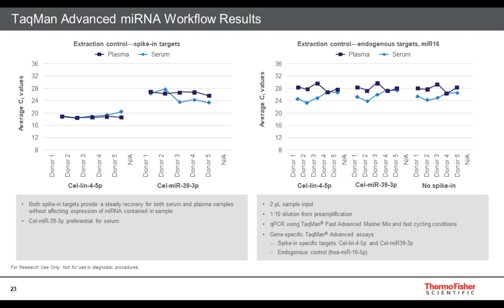I also tested the TaqMan Advanced chemistry. For TaqMan Advanced, we recommend some additional five-prime modifications to ensure best results. Very similar results to the standard: minimal effect on the no-spike-in endogenous targets, and similar results for each spike-in across different sample types. I will now hand it off to Harita to discuss quantification and normalization.